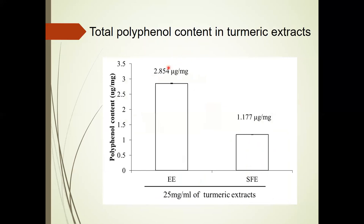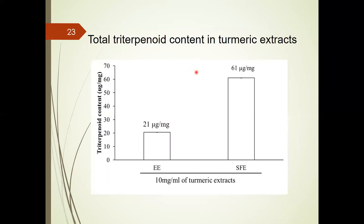In the results, we first compared the total polyphenol content in turmeric extract — EE from ethanol extraction and SFE from supercritical fluid extraction. We found EE had 2.5 times higher polyphenol content than SFE. Next, we checked the total terpenoid content and found SFE had about 2.9 times higher terpenoid content than EE. This data suggests that the components in EE from ethanol extraction could be different from those in supercritical fluid extraction. We then used HPLC to analyze the main components in EE and SFE.